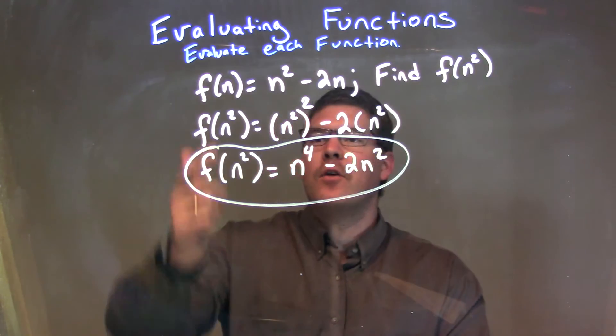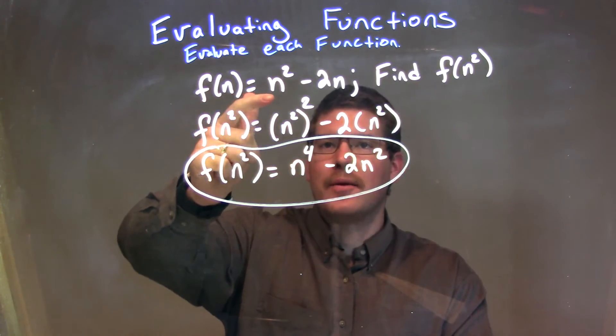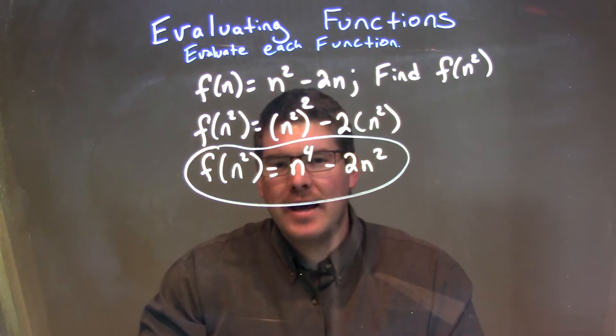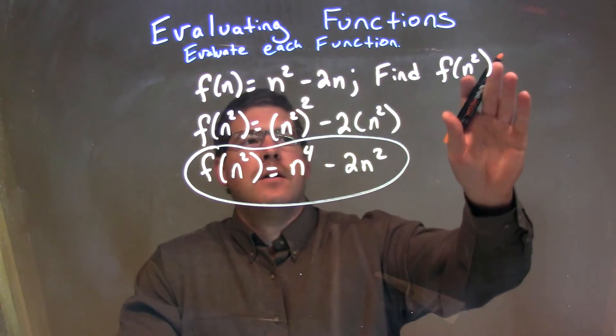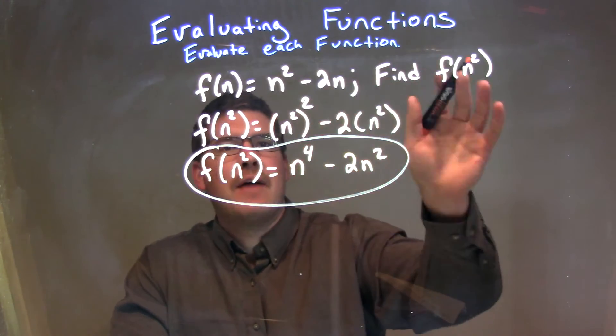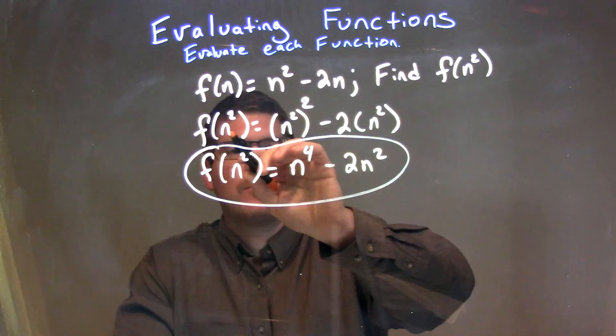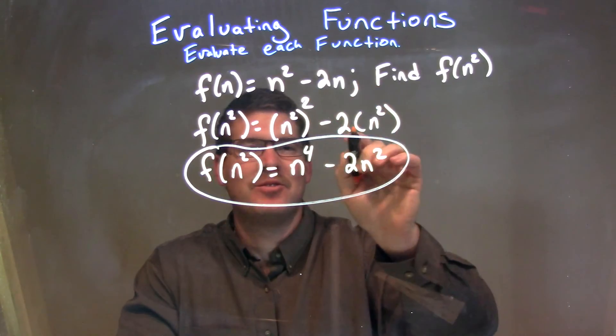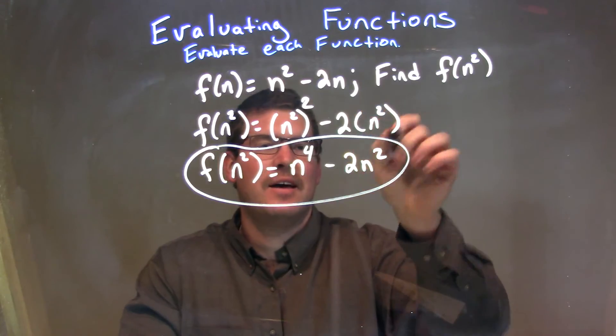So let's recap. We're given f of n equals n squared minus 2n, and we're going to find f of n squared. What we want to do is every single time we see an n, we plug in an n squared. So f of n squared is equal to n squared all to the second power—it's a little confusing—minus 2 times n squared.